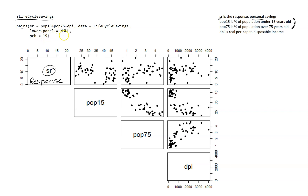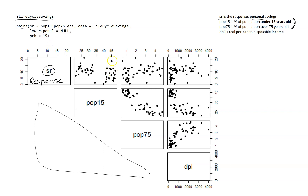So I just turn that lower panel off using lower.panel equals null, which leaves that space blank. That way I'm not getting confused by too many things. The default is a blank circle, which looks a little messy, so I like filled-in circles. I added PCH equals 19 so the points are all filled in.